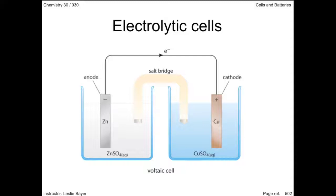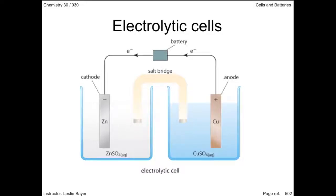The redox reaction in a voltaic cell proceeds in one direction. The Daniell cell has an anode where oxidation occurs at the zinc electrode, and reduction occurs at the cathode, the copper electrode. However, if a power supply were added to the external circuit to force electrons to move in the opposite direction, the copper electrode will undergo oxidation and becomes the anode, while the zinc electrode becomes the cathode as it gains electrons. As you may have noticed, electrodes in this electrolytic cell, as with the voltaic cell, keep their charged designations.